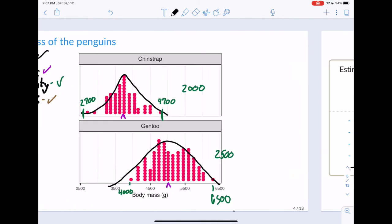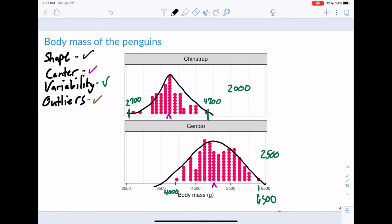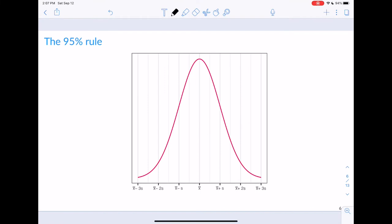If we look back here, these two distributions don't look too unlike a bell shape. They kind of look like a bell. It's not super hard to imagine.